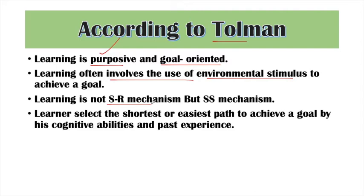Learning is not an SR (Stimulus-Response) mechanism, but an SS (Stimulus-Stimulus) mechanism. Traditional theories like classical conditioning and operant conditioning were based on simple SR mechanism — a stimulus would come and the learner would respond. Tolman denied this mechanism totally, saying learning is SS mechanism where stimuli and signals lead us forward.